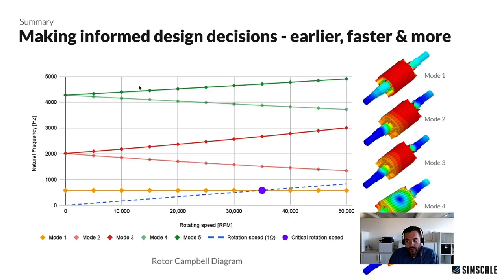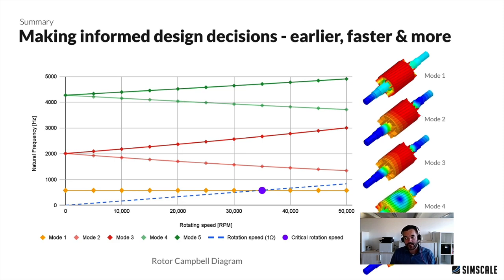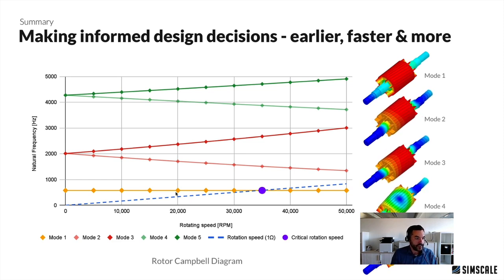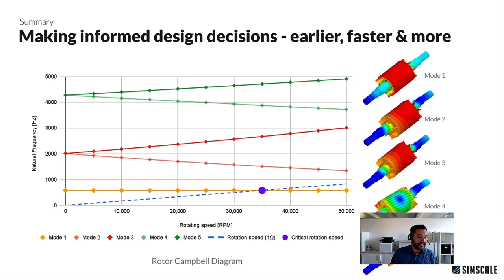Similarly for the frequency analysis — this is a Campbell diagram where we see the natural frequencies plotted over the rotating speed of the shaft. We can see the different modes and check whether or not the rotor operates safely when it comes to eigenfrequencies. To produce something like this in a traditional simulation environment would take days running all those sequentially. With SimScale, thanks to the scalability of the cloud, you can do all of this simultaneously, be done within a matter of hours, and make such decisions within a day — not within weeks.